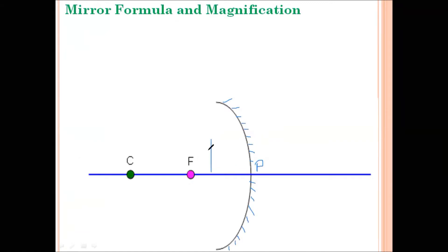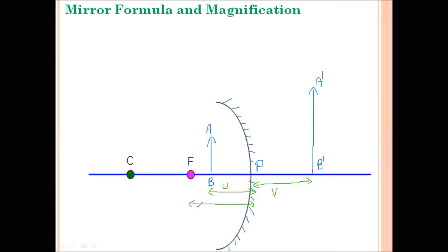Suppose object AB is placed between the pole and focus of a concave mirror. We know whenever an object is placed between the pole and focus, the image formed is behind the mirror — virtual, erect, and magnified. The distance between the pole and the object is denoted by U, the distance between the pole and the image is denoted by V, and the distance between the pole and the focus is denoted by F. Let the height of the object be H and the height of the image be H'.